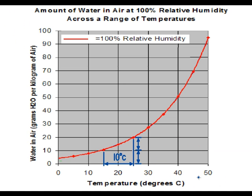Likewise, if we were to decrease the temperature, the amount of water which that parcel of air would be able to hold would also decrease. So if the air were moist, there would be rain or dew or some form of precipitation.